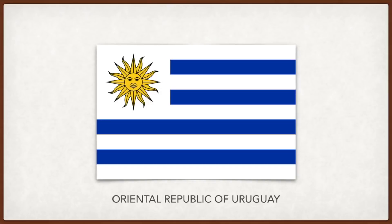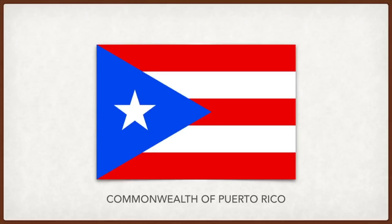Puerto Rico: the star represents the Commonwealth of Puerto Rico, the white stripes stand for human rights and individual freedom, and the three red stripes and the three corners of the triangle stand for the three branches of government.